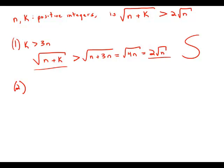Statement number 2 tells us that n plus k is greater than 3n. Well, that means that the square root of n plus k would be greater than the square root of 3n. And we could write that as the square root of 3 times the square root of n.